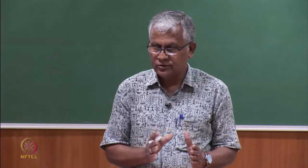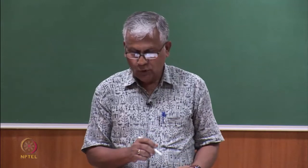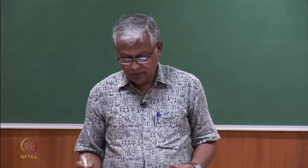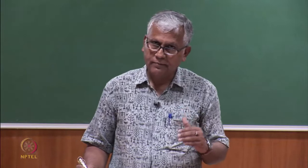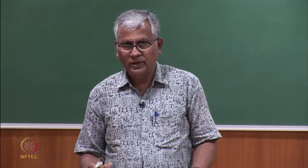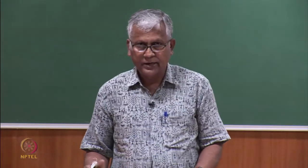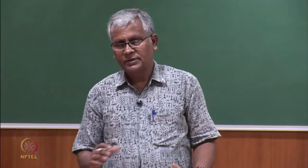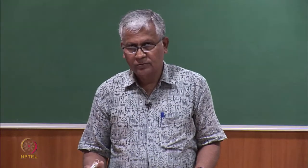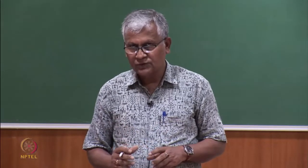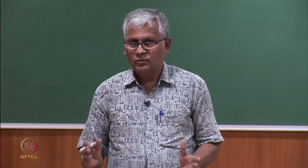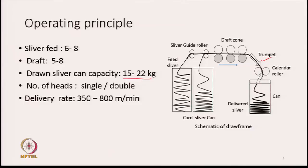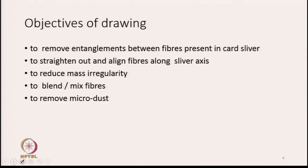This is how the machine works. Briefly, we feed between 6 to 8 slivers; all the slivers pass over a feed table with guiding rollers. These slivers gradually enter the drafting zone and are all drafted together with a draft varying between 5 to 8. The drafted slivers move out of the drafting zone, the wave is collected and transformed into a sliver, and the sliver is finally packed within a can. This is the operating principle of the machine.